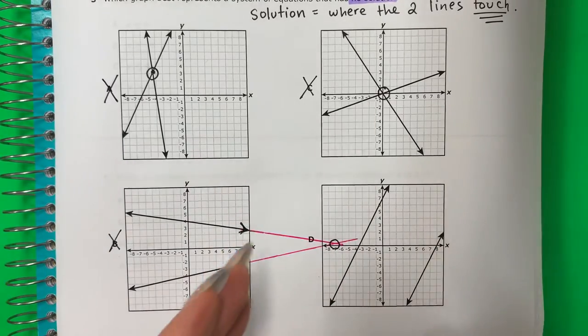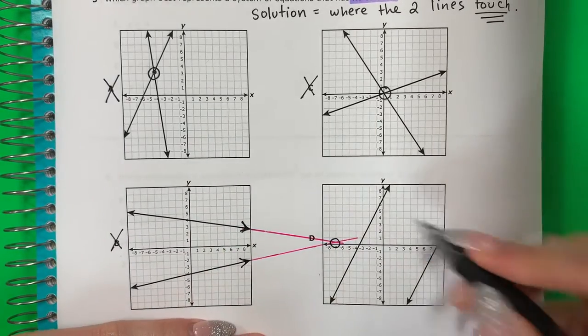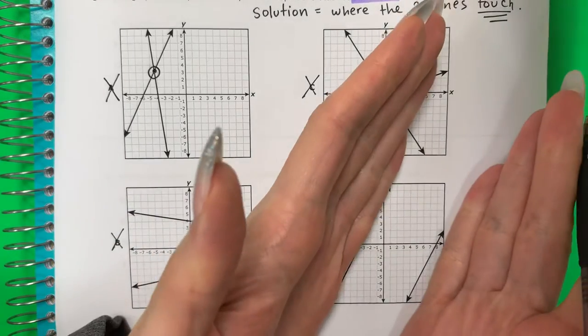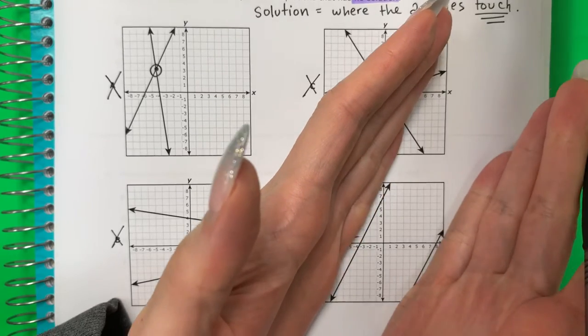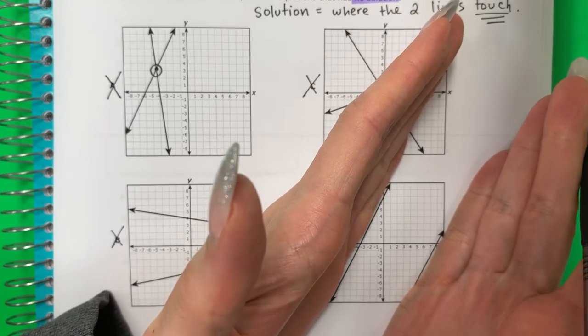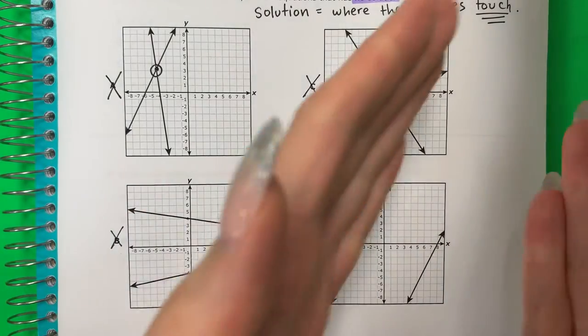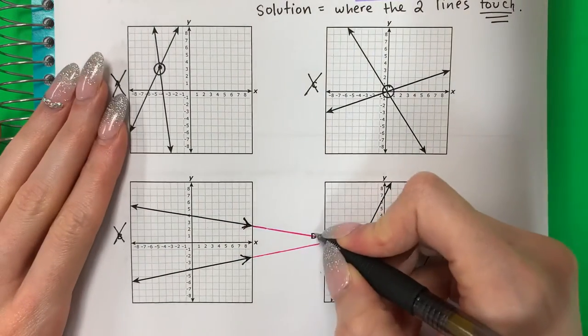Take a look at these lines. Mira estas líneas. These lines are parallel. Estas líneas son paralelas. What that means is that they will continue forever without ever touching. Okay, so this is my answer here. D.